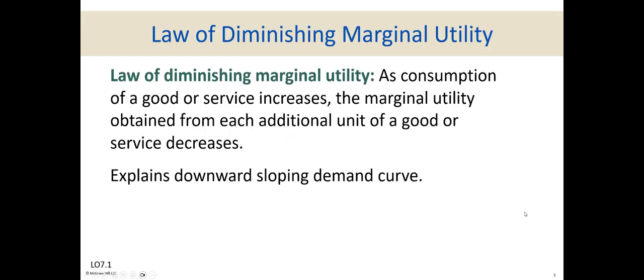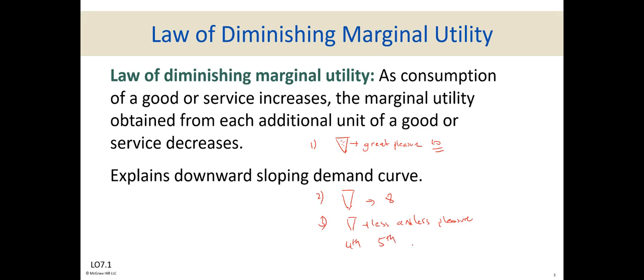The law of diminishing marginal utility tells us that as you consume more of a good or service, each additional unit gives you less satisfaction. For example, at a buffet when you're very hungry, the first pizza gives you great pleasure — say 10 out of 10. The second pizza is still great but gives less pleasure, maybe 8 out of 10. The third gives less and less. And after the fourth or fifth pizza, you might feel a stomach ache — that's not even giving you pleasure, it's hurting you.